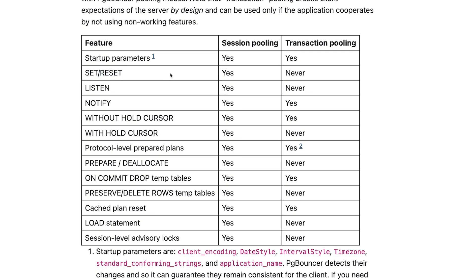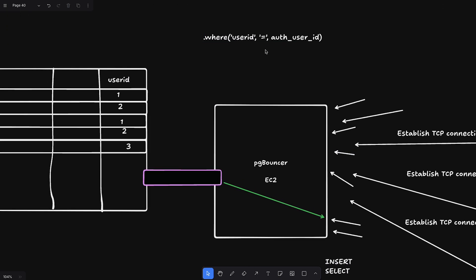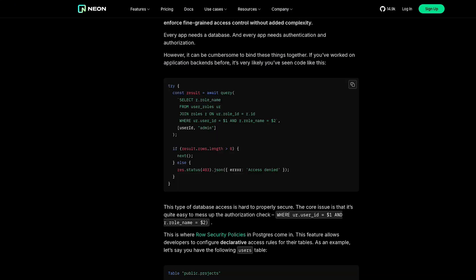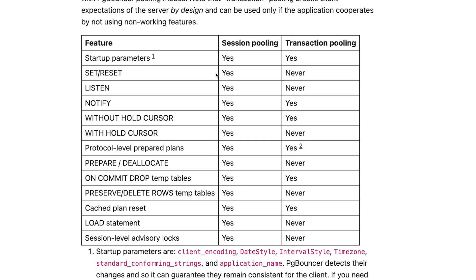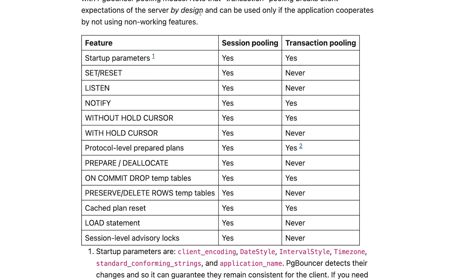The SET command is required when you want to set the auth user ID to the logged-in user ID for RLS. So you might ask how Neon and other providers handle this. If you're using raw Postgres compute with PG Bouncer, you can't just SET something on the session — it has to be SET LOCAL, which scopes only to the currently executing transaction, or you have to use session mode.